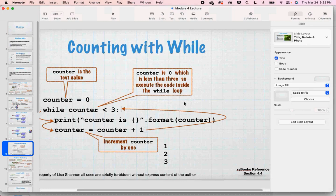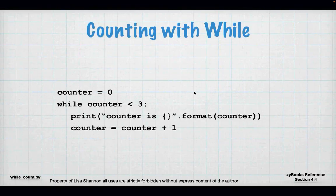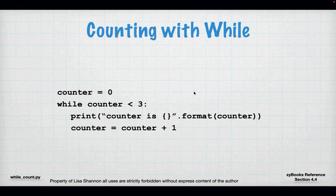Now let's talk about counting. The first thing we just did was a normal sentinel value, but sometimes you want to count things up or down. You can count with a while loop, though I use for loops when I'm counting almost all of the time. But we'll go through counting with a while loop. I have `counter` set equal to zero because I want to start at zero, and while counter is less than three, I'm going to print what counter is and then increment the counter.